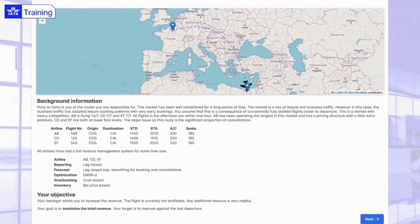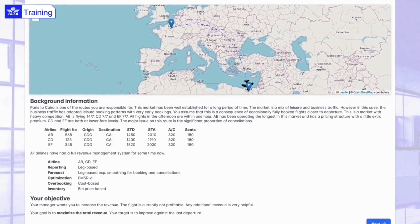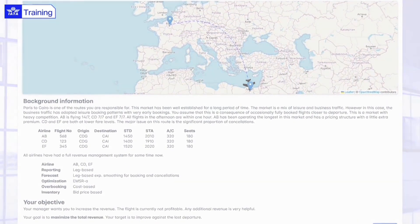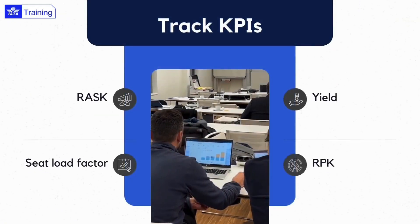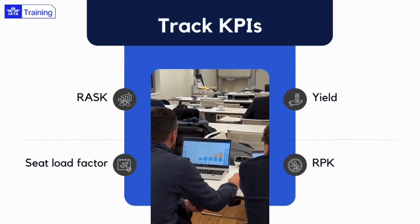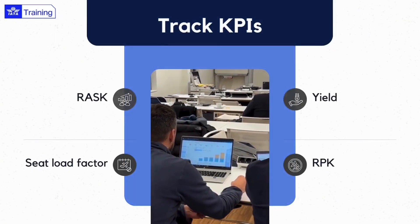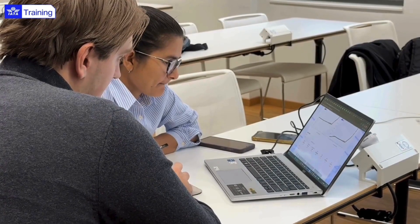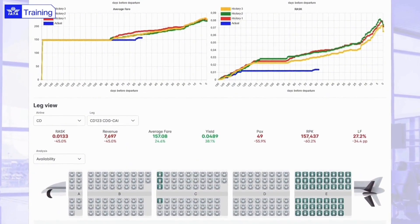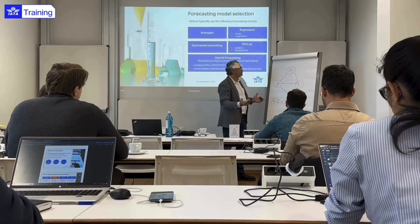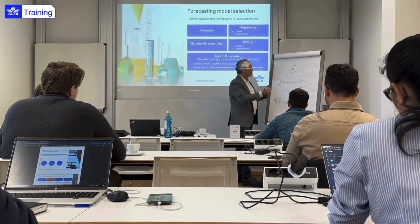Take charge of a real-world flight route. Your mission is to maximize revenue — access critical data and market insights all in one place. Track KPIs with dynamic charts. The report provides an overview of availability, pricing, and forecasts.